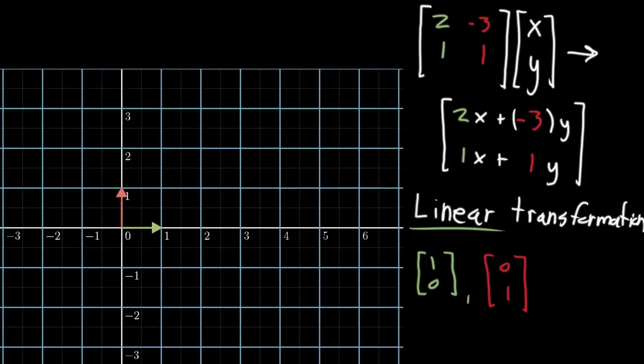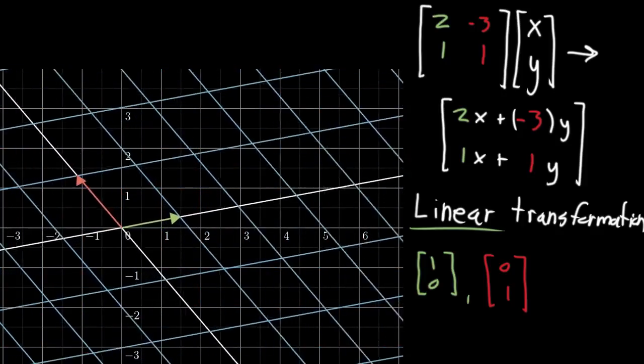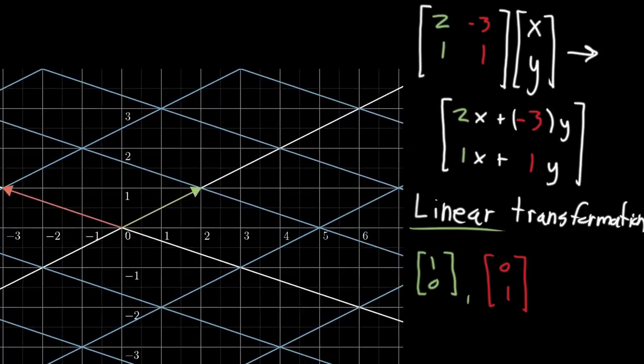And if we notice where they land, under this transformation, when the matrix is multiplied by every single vector in space, the place where the green vector lands, the one that started off as 1, 0, has coordinates 2, 1. And that corresponds very directly with the fact that the first column of our matrix is 2, 1. And then similarly, over here, the second vector, the one that started off as 0, 1, ends up at the coordinates negative 3, 1. And that's what corresponds with the fact that the next column is negative 3, 1.